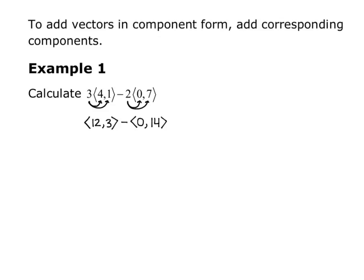Now I'm going to, since it's a subtraction in this case, I'm going to subtract corresponding components. So I'll get 12 minus 0 will give me my x component, and 3 minus 14 will give me my y component. And so the resulting vector is vector (12, -11). And we're putting it in component form, so that means in the angle brackets.